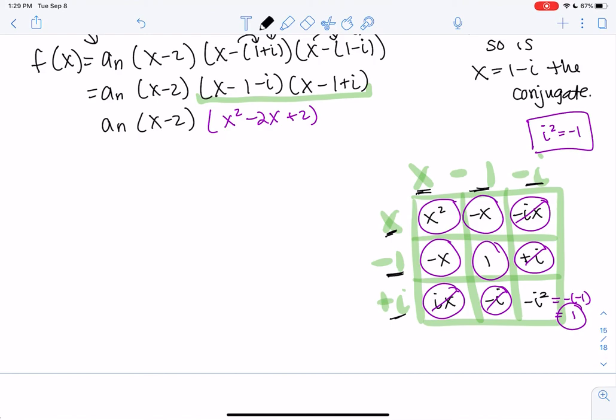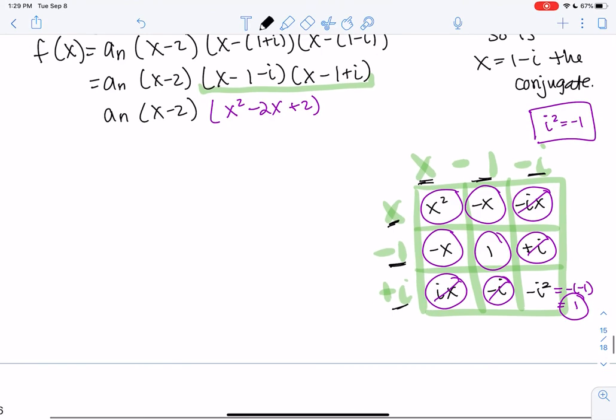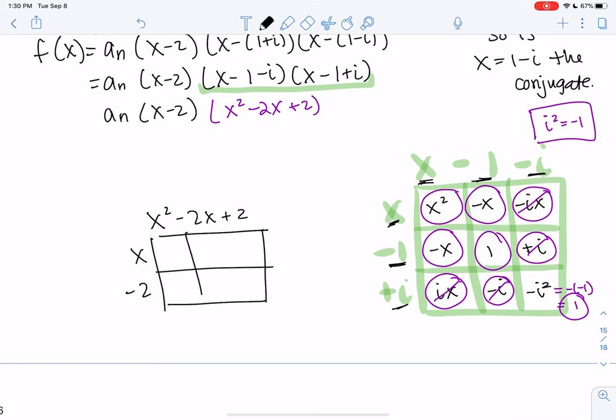And then we'll multiply that by x minus 2. And I'll make boxes one more time. So this one will be x squared minus 2x plus 2, x minus 2. So this one's only six boxes because it's 2 by 3. So we get x cubed minus 2x squared, 2x minus 2x squared, 4x, and then we get minus 4.